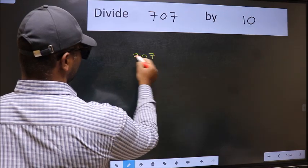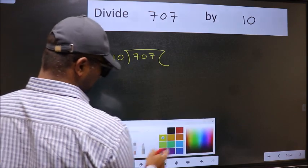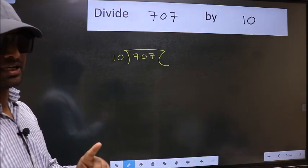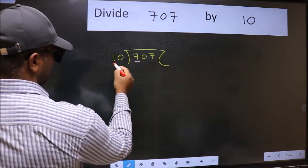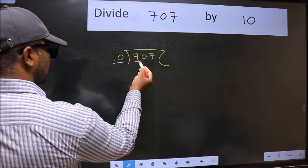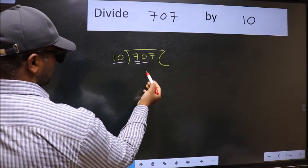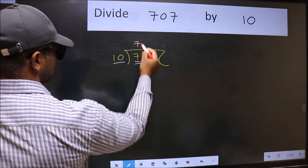707 and 10 here. This is your step 1. Next, here we have 7 and here 10. 7 is smaller than 10, so we should take two numbers, 70. When do we get 70 in 10 table? 10 times 7 is 70.